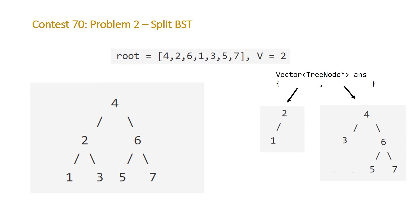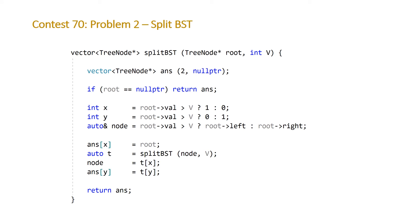So let's take a look at the code. As you can see the first thing we're doing is constructing our two element vector. This constructor passes in the length of our vector and then this is just our initialization value. If our root is equal to null pointer we're just going to return this two element vector where both of the values are null pointer and then the important part of our algorithm happens after that.